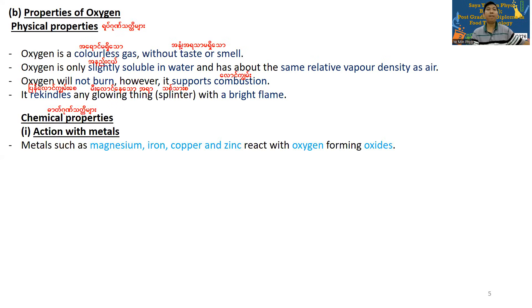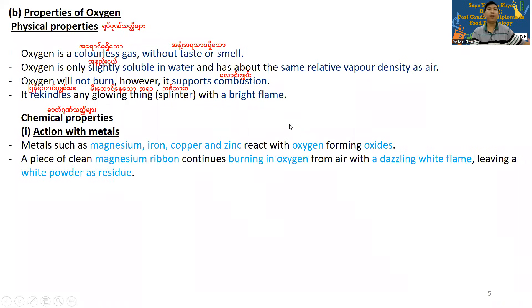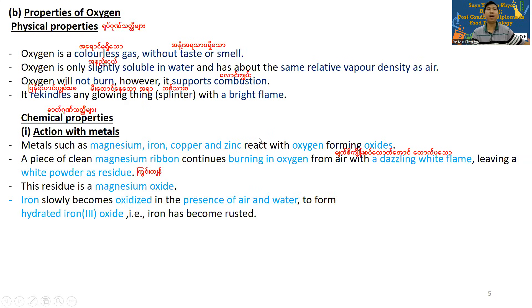Chemical reactions of oxygen: magnesium, copper, and zinc react with oxygen. Magnesium burns in oxygen with a bright white flame, leaving a white residue — magnesium oxide. Iron also reacts with oxygen to form hydrated iron(III) oxide.